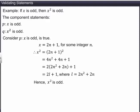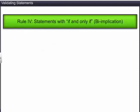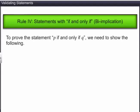Rule 4 is used to prove by biconditional implications. To prove the statement 'P if and only if Q', we need to show two things: first, if P is true then Q is true; and second, if Q is true then P is true.